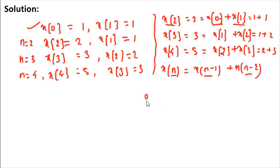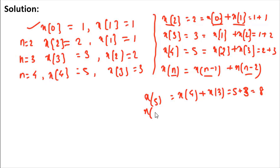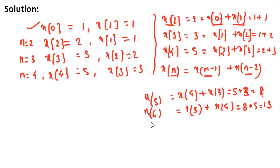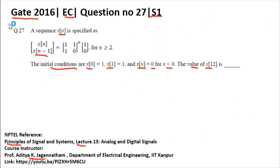Now, using this recurrence: x[5] = x[4] + x[3] = 5 + 3 = 8, and x[6] = x[5] + x[4] = 8 + 5 = 13. Continuing this pattern up to x[12], you will get the answer as 233. So the final answer for this question is x[12] = 233.